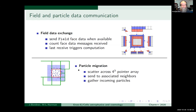Particles also need to be communicated. Particles are assigned to a block based on position — if it's inside a block, it's assigned there. But particles move around and might leave the block, so you periodically send migrated particles to neighboring blocks and gather particles from neighboring blocks that have moved into the center block.